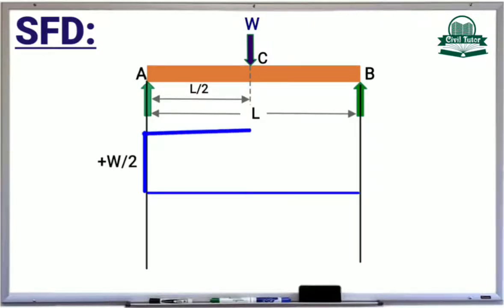As the shear force between C and B remains constant and equal to minus W by 2, we will draw minus W by 2 to some scale below the baseline at point C, and we will draw this parallel line from point C to B.